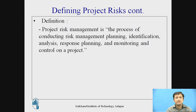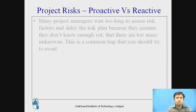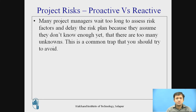There are two types of project risk: proactive risk and reactive risk. Many project managers wait too long to assess risk factors and delay the risk plan because they assume they don't know enough yet and there are too many unknowns. This is a common trap you should try to avoid. We have to search from previous projects, understand what risks were involved in similar projects, and have a brainstorming session among our employees.